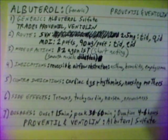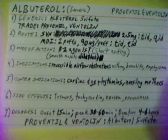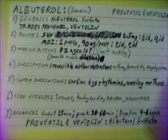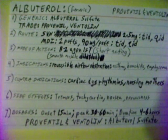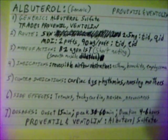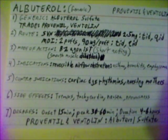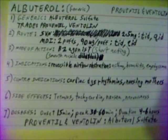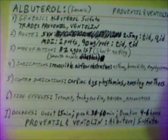Albuterol sulfate's onset is 15 minutes, peak is 30 to 60 minutes, and duration is 4 to 6 hours. Trade names: Proventil and Ventolin.